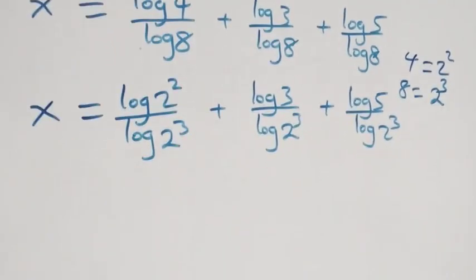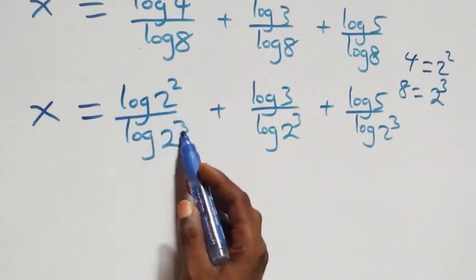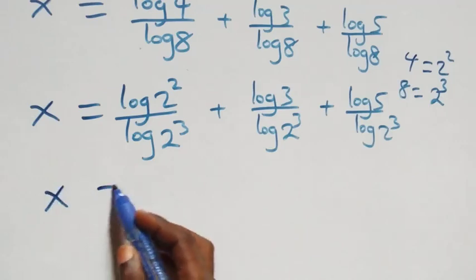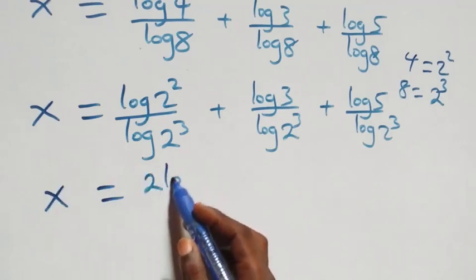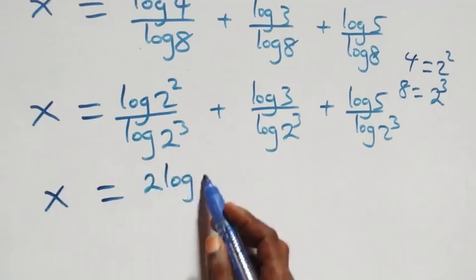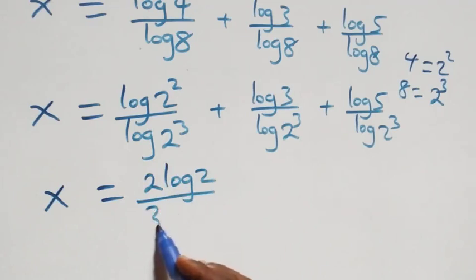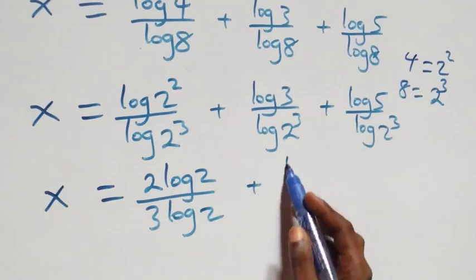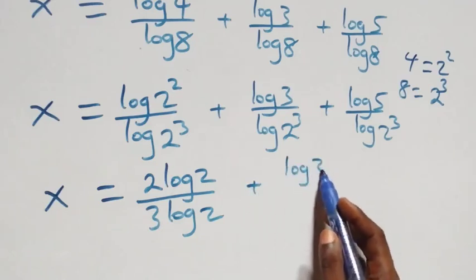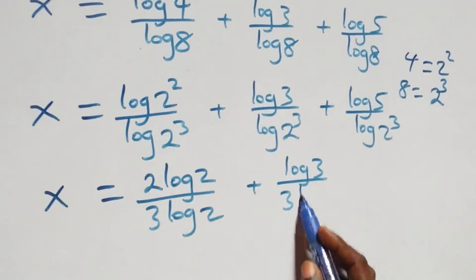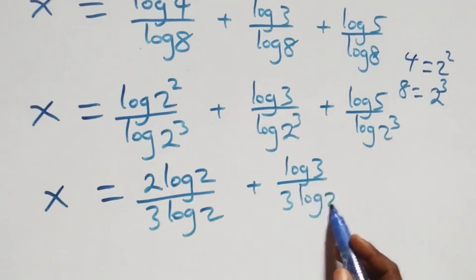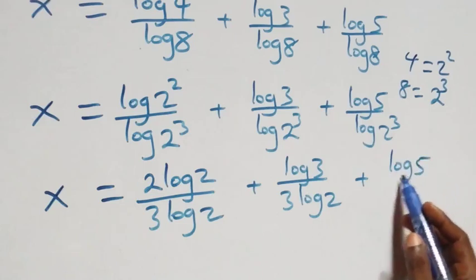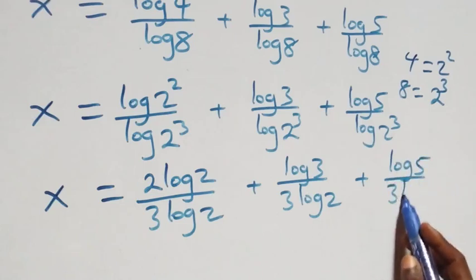Applying the power law of logarithm, the exponents come down: x equals to two log two over three log two, plus log three over three log two, plus log five over three log two.